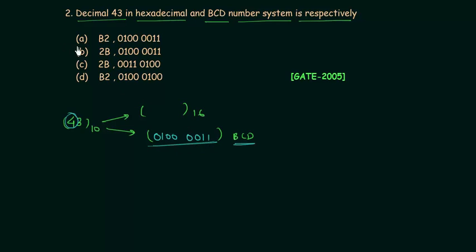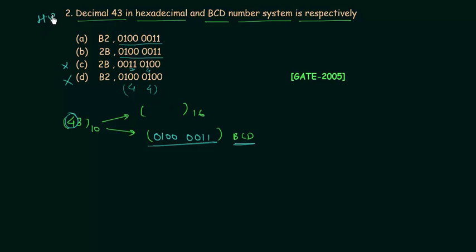Checking the options: option A has 0100 0011, which is the correct BCD representation. Option B also has the correct BCD representation. Option C has 00011 followed by 01000, which represents 34 — incorrect. Option D has 01000 then 0100, representing 44 — also incorrect. We are left with options A and B. Finding the hexadecimal equivalent of 43 is homework for you — post your answer in the comment section. That's all for this lecture; see you in the next one.